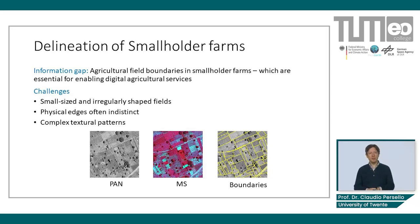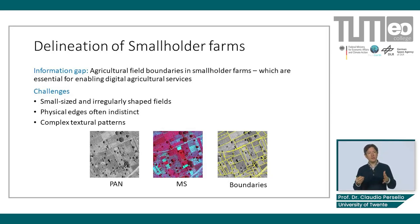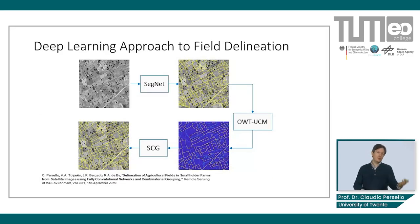Fields are irregularly shaped and have indistinct boundaries. Standard edge or contour detection methods typically fail to extract accurate field boundaries in these conditions. As shown in the sample panchromatic and multispectral images with corresponding reference boundaries, field boundaries are not clearly visible — often they are associated with the transition between different textural patterns.